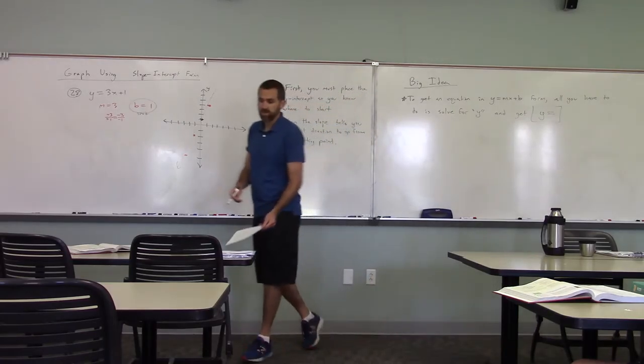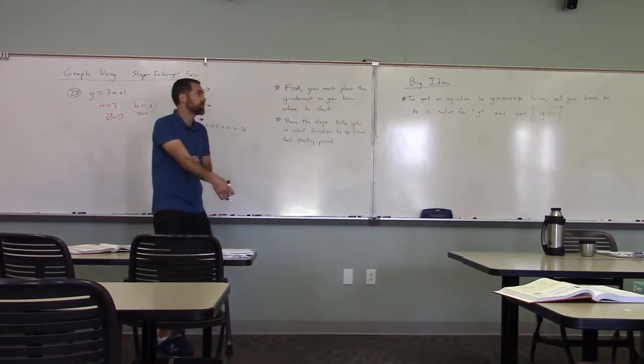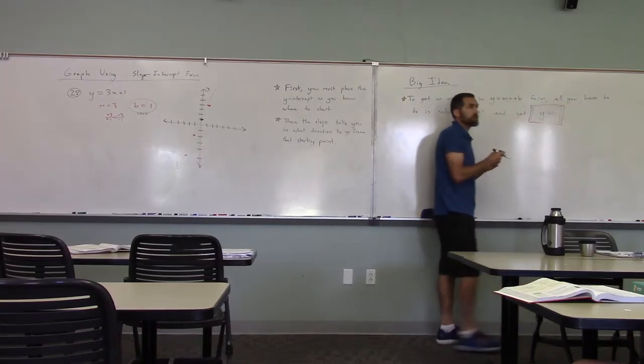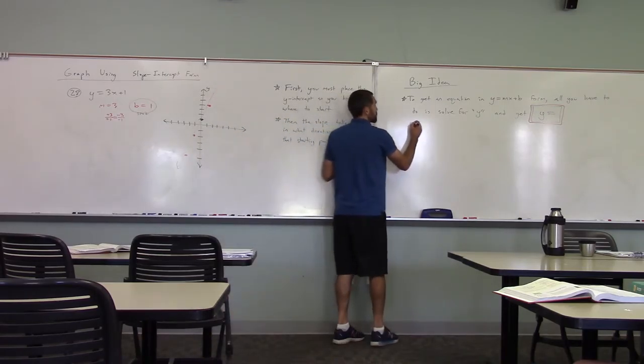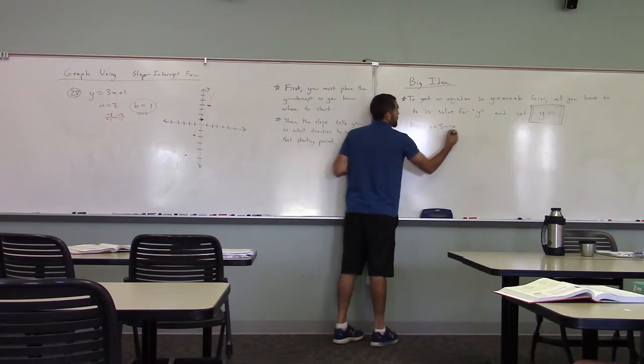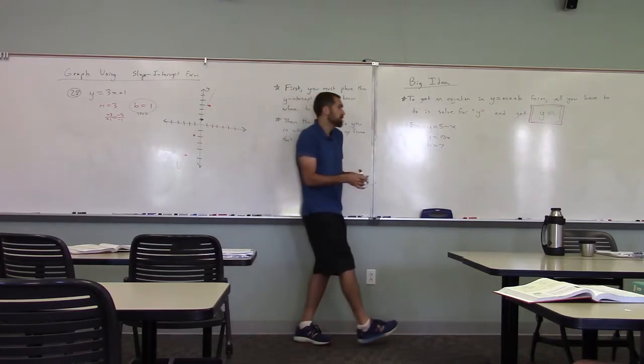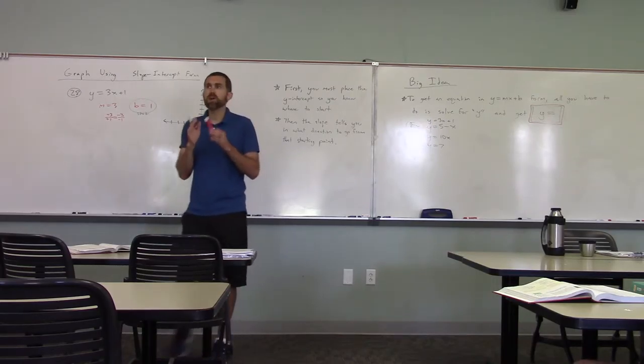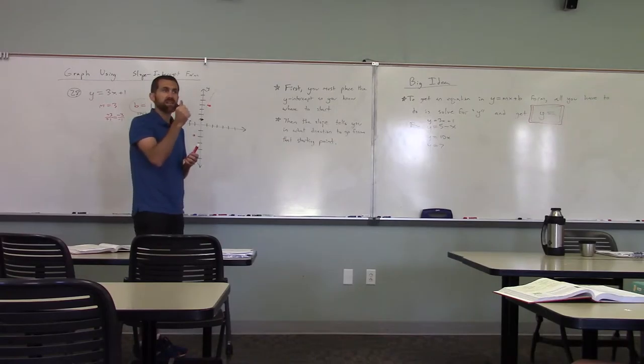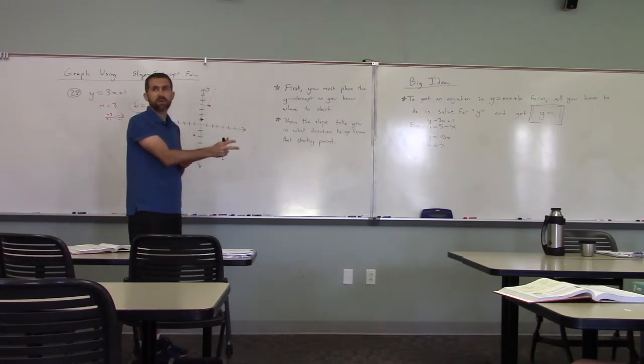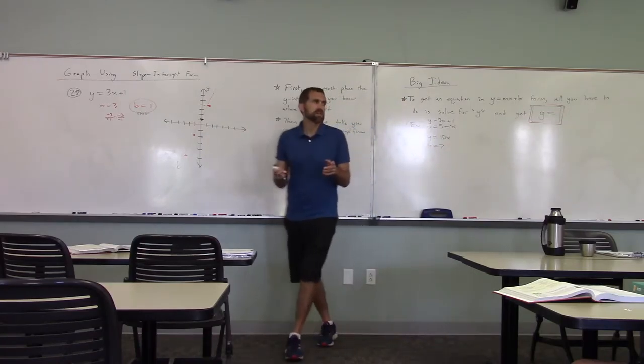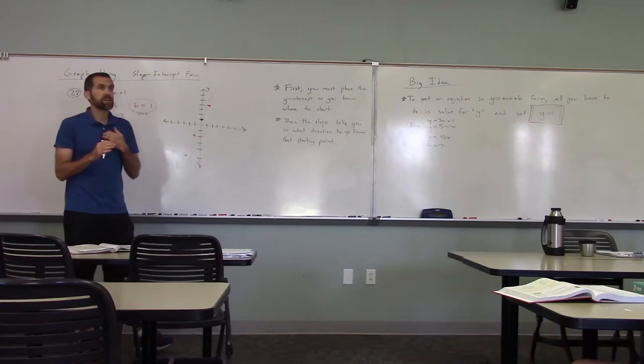So when we say y equals mx plus b form, people get confused because sometimes there aren't x's, sometimes there aren't numbers. The biggest thing is you just get y by itself. As long as you have y equals, it's always in y equals mx plus b form. We have examples like y equals 5 minus x, y equals 10x, y equals 7. These are all examples that are in y equals mx plus b form, even though they don't look like it. As long as it's y equals, it's in the right form, immediately you can say the slope is, the y-intercept is, and graph it with no arithmetic at all. And this always works.